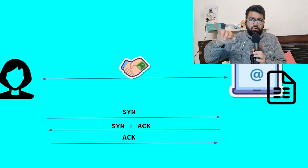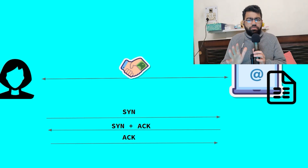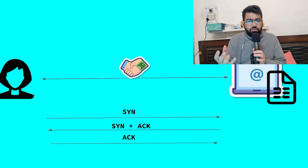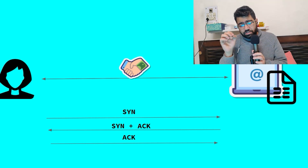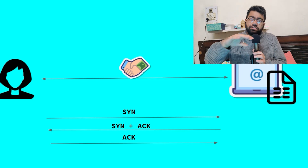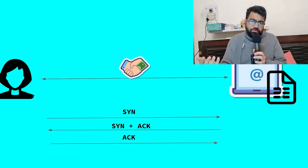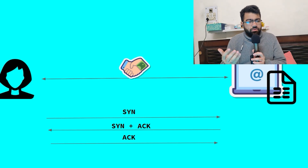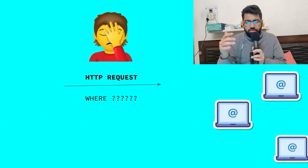In many cases API latency increases because of this round trip time. Suppose you are in India making a call to a server in the US — it will take a lot of time, whereas if the server is in your vicinity it will take less time. That's why people try to create servers in different continents so that this time is reduced and the API call time is reduced.